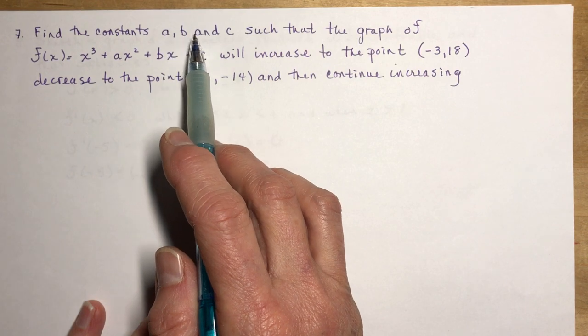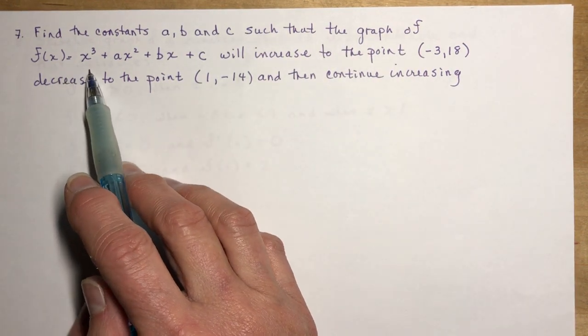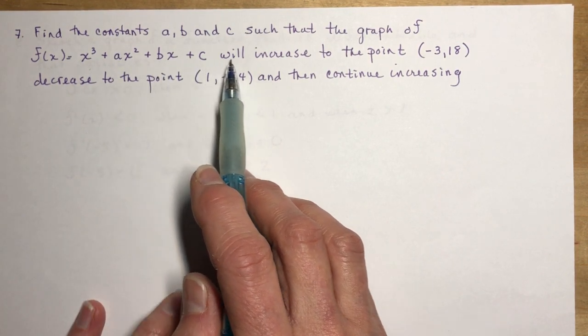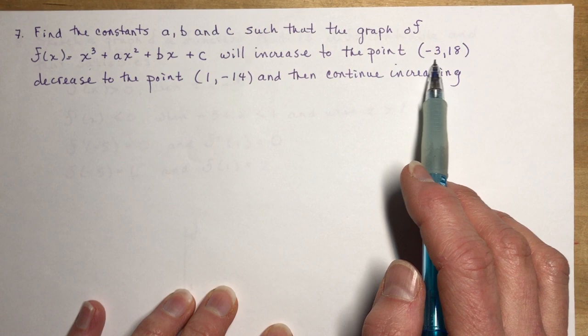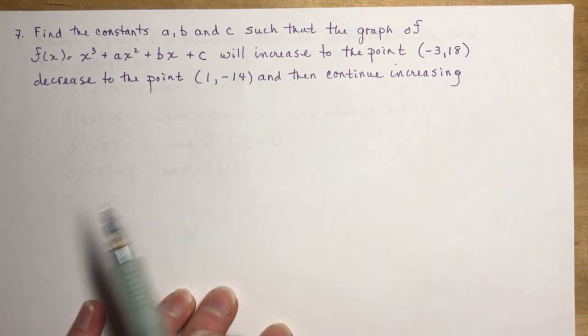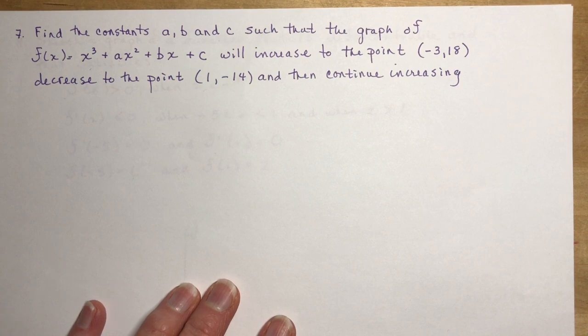Find the constants a, b, and c, such that the graph of f(x) = x³ + ax² + bx + c will increase to this point and decrease to this point and then continue increasing. So that looks pretty difficult, doesn't it? And a lot of students look at that and say, I don't know even where to begin.